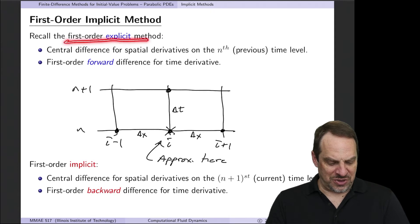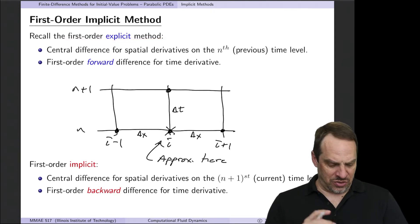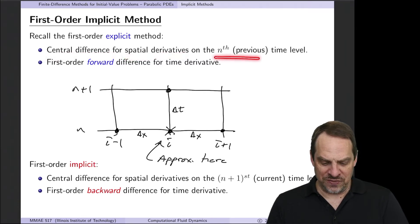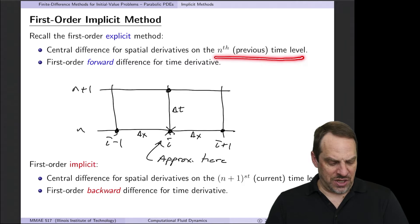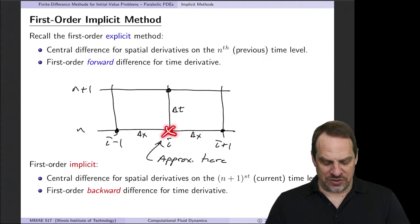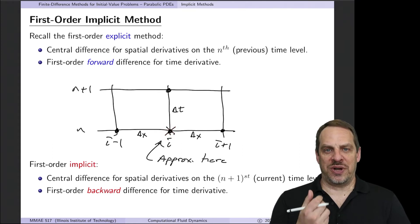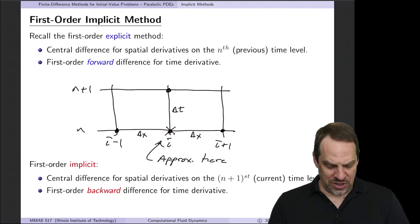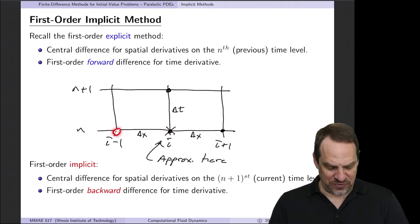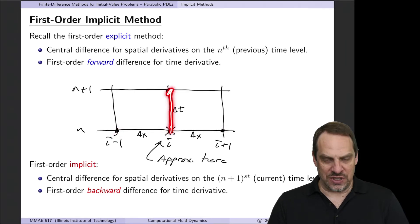Remember the first-order explicit method: we use central difference approximations for the spatial derivatives at the previous, or nth time level, and then the first-order accurate forward difference in time. The x marks the spot gives us the location where we're approximating the differential equation — here it's at i, n, so at the previous time step. We have a central difference in x and then a forward difference in time.